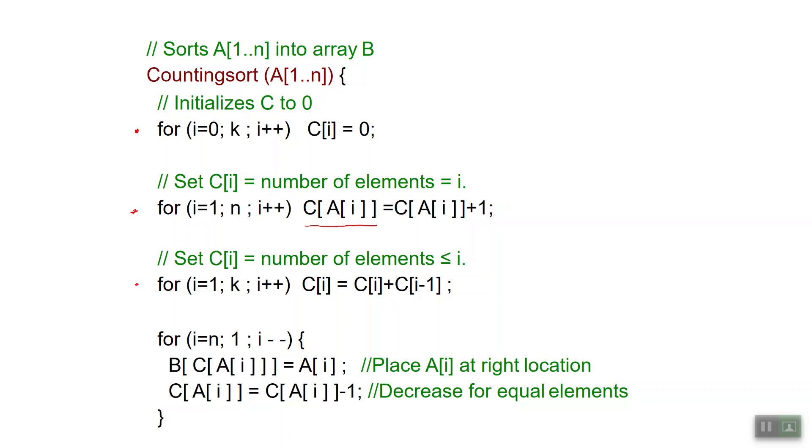Once I have these counts we can do a final for loop where we place each item A[i] in the right location. Specifically to place a number A[i] we look at the location A[i] in the array C and we use that as an index into B.